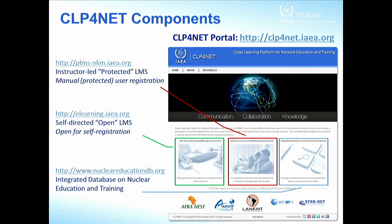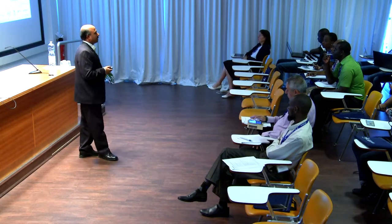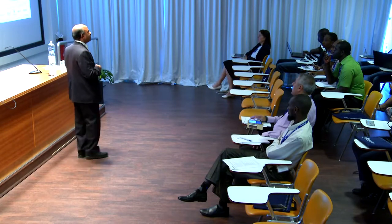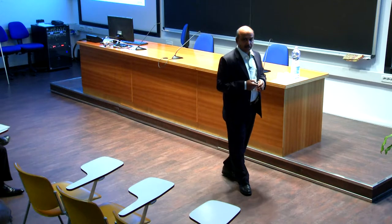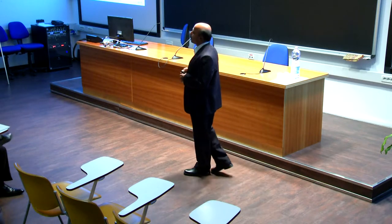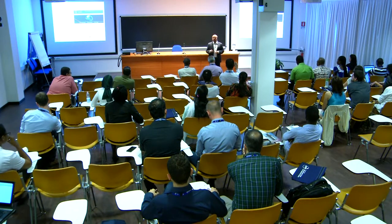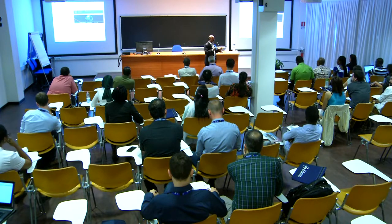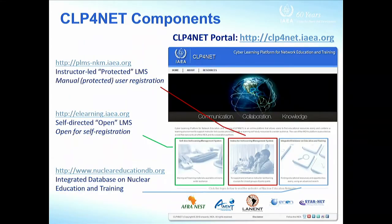The third component is the Integrated Database on Nuclear Education and Training. We have many cooperation network partners in different regions — LANENT in Latin America, ANENT in Asia, and ENEN in Europe. The aim is to request networking partners to gather metadata of all training programs in nuclear education and put them in one place, available through the CLP4NET platform. The technology is already in place, but we are still negotiating with counterparts on gathering the content, so it may take another three or four months to get established.